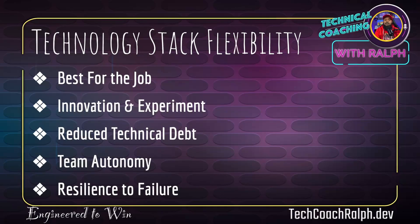Technology stack flexibility gives you a best-for-the-job mindset. For example, you could use Python and FastAPI to build the backend API, while using Node.js and Express for the frontend. One team builds in Python, another team builds in Node.js, and based on the APIs exposed for the backend, they connect easily — it doesn't matter what language each service is written in. With a monolithic approach, the entire codebase has to follow one language. Microservices also allow innovation and experimentation — you can try different code bases, see what works, and other teams are not affected. It reduces technical debt and enables team autonomy.